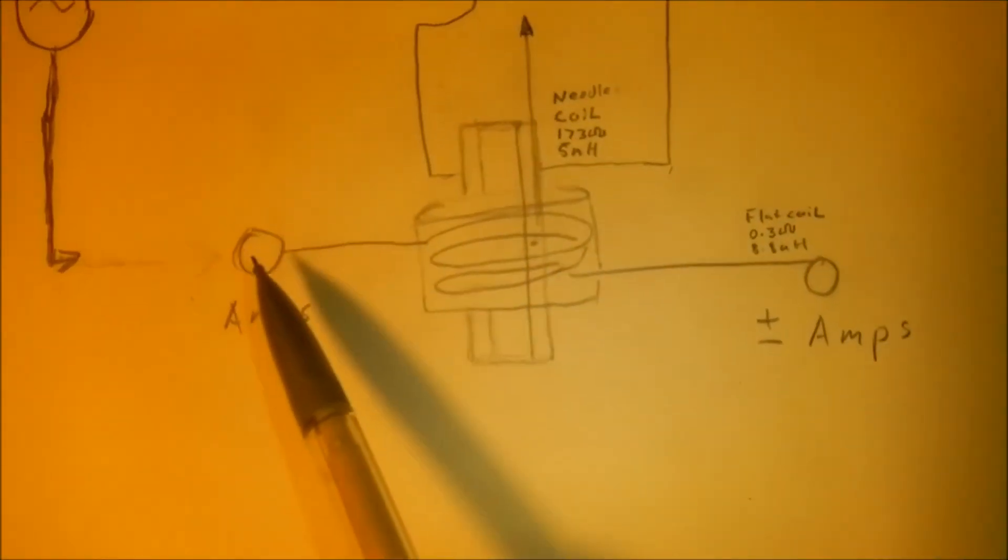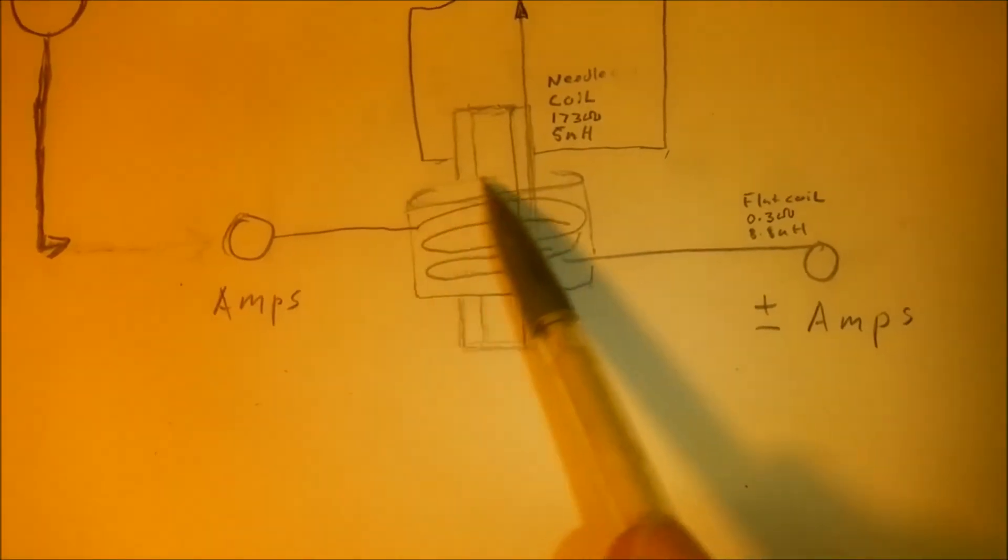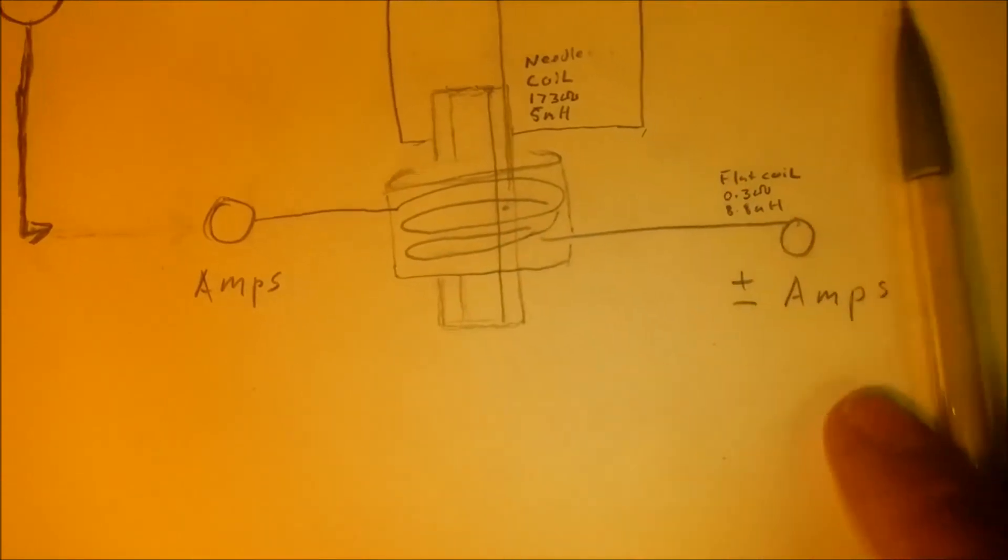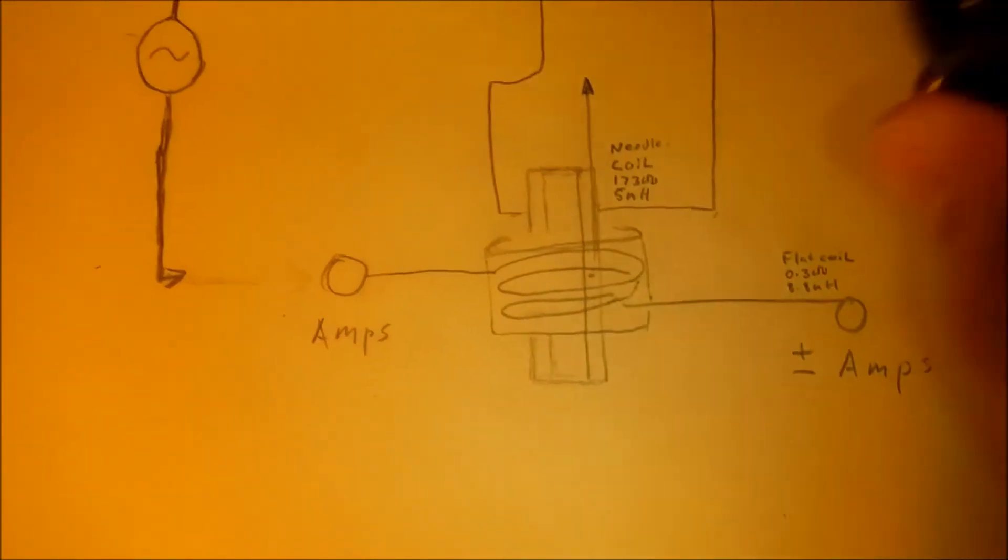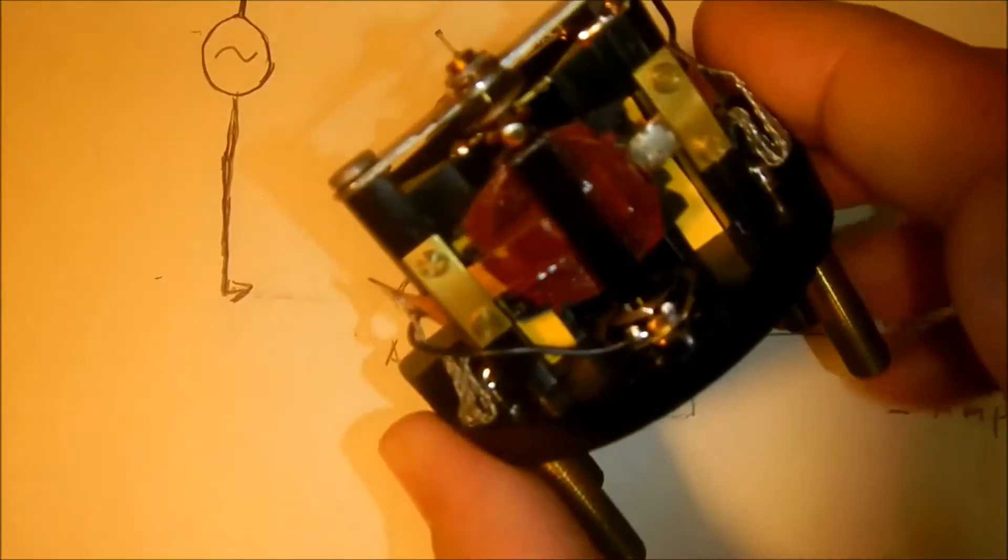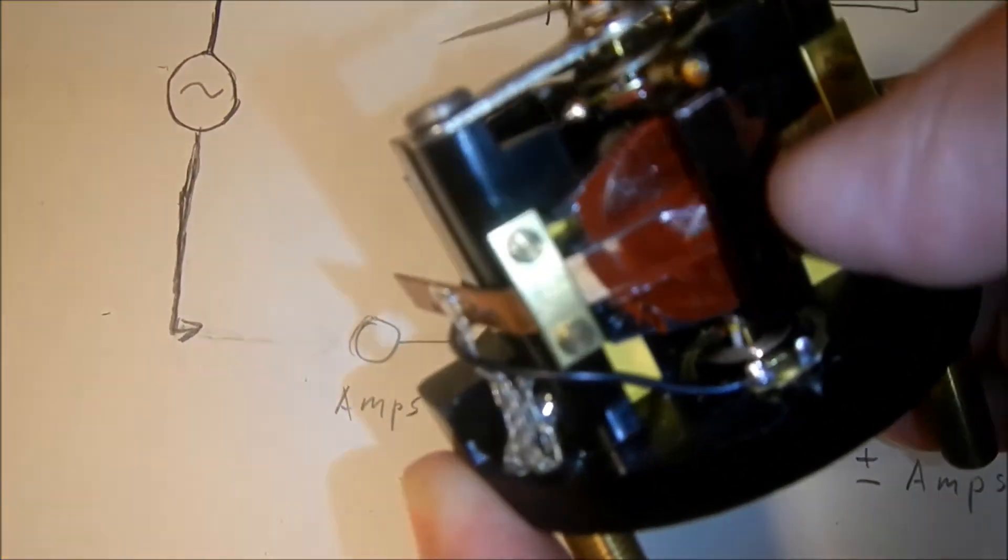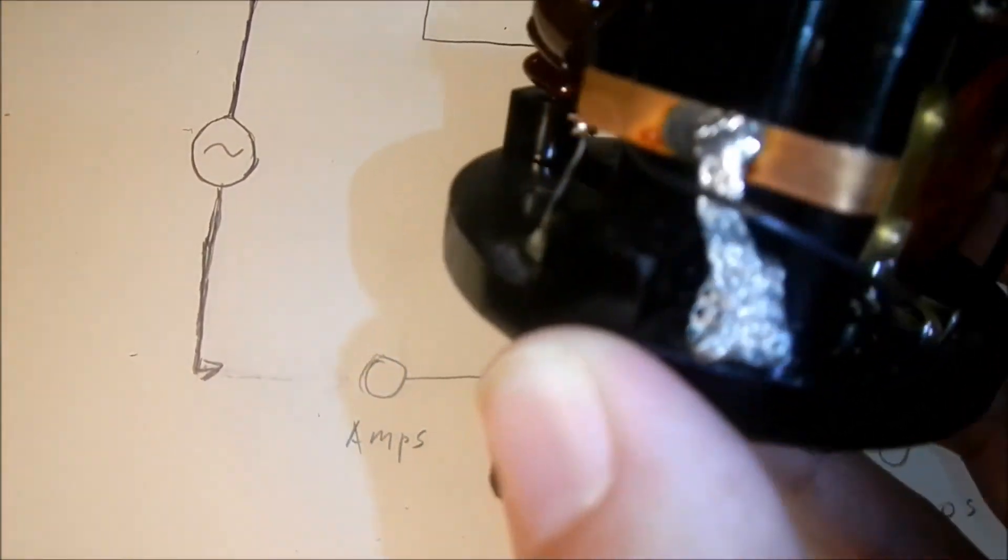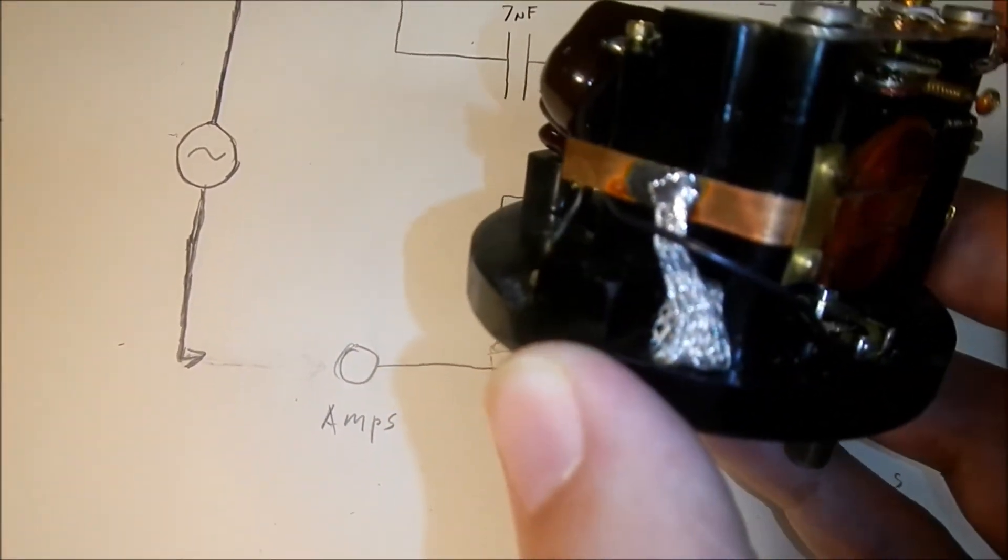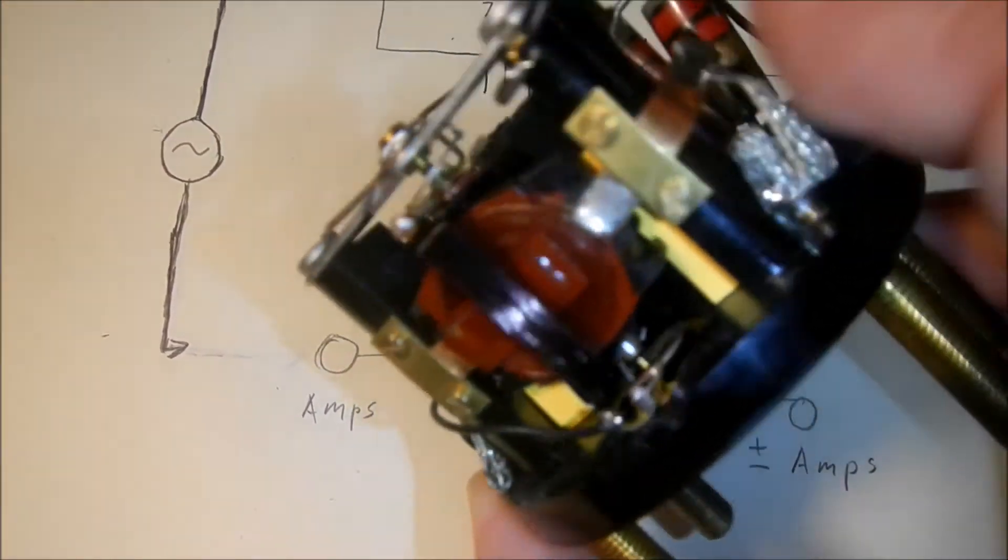And the current going through the load would go through this flat pancake coil. This current will produce a magnetic field.